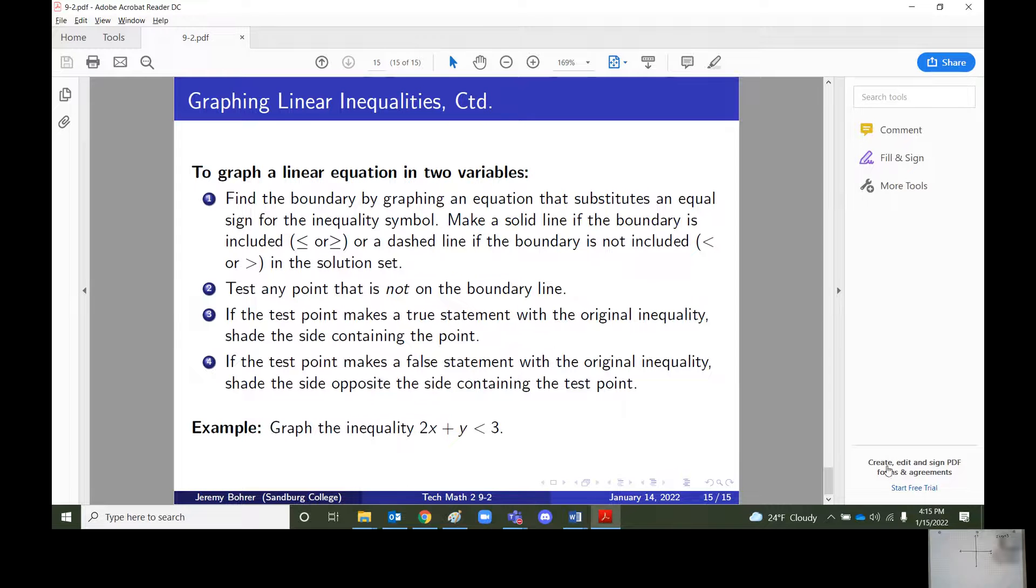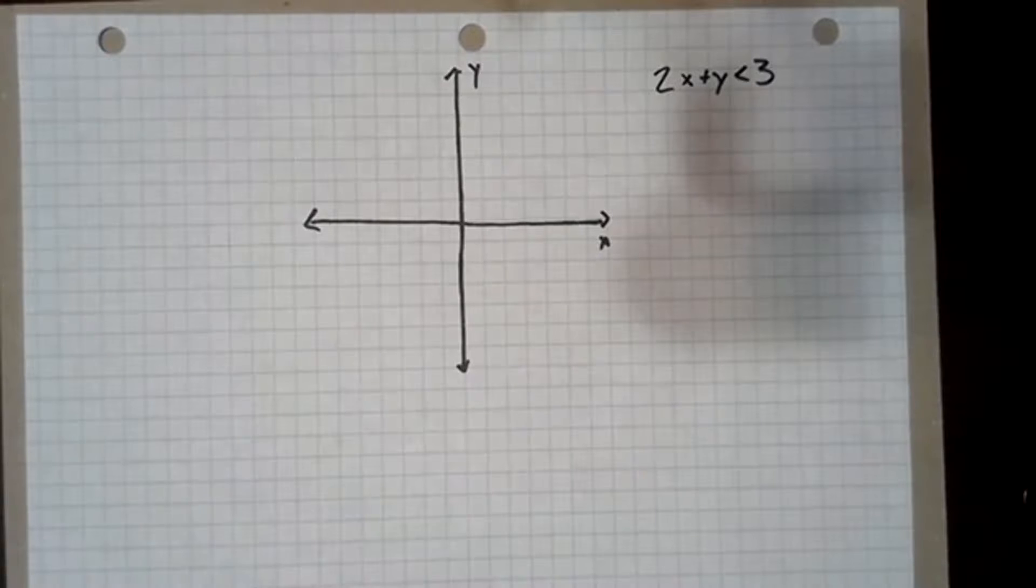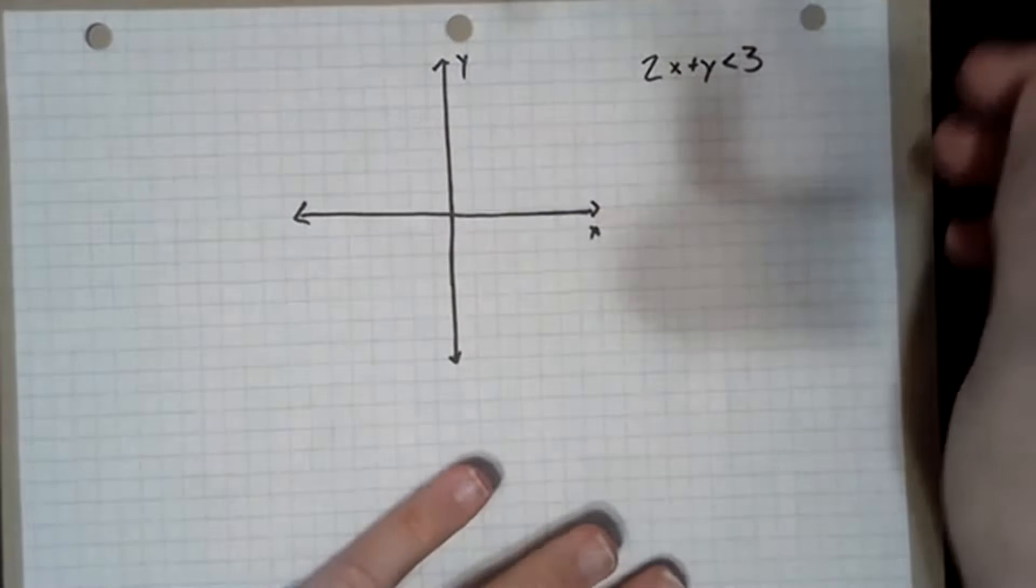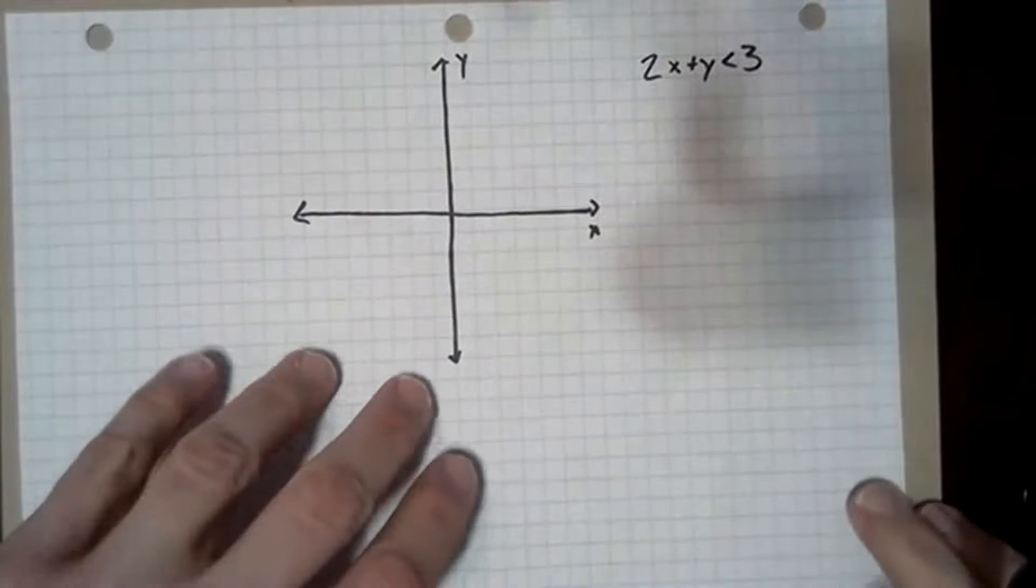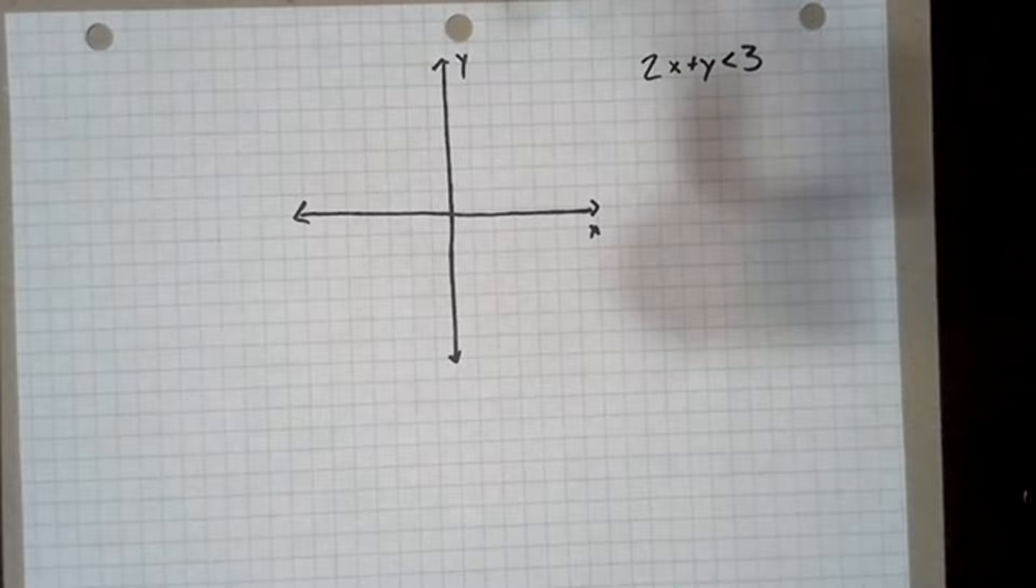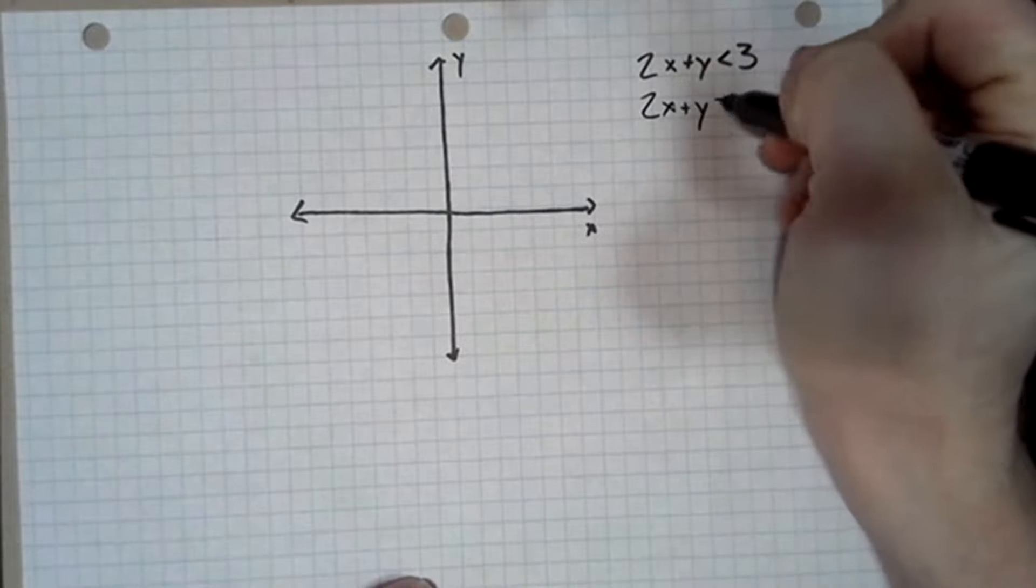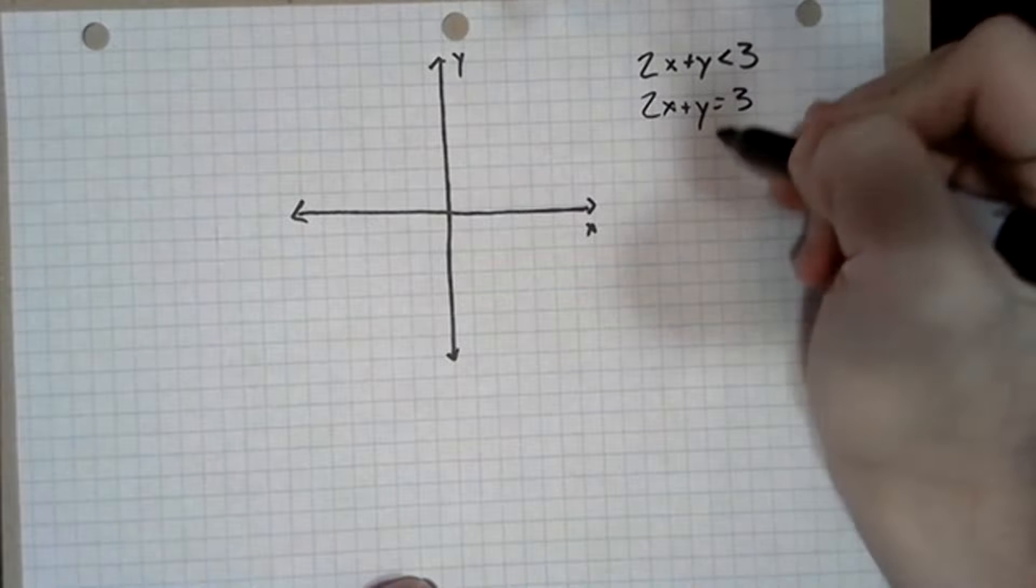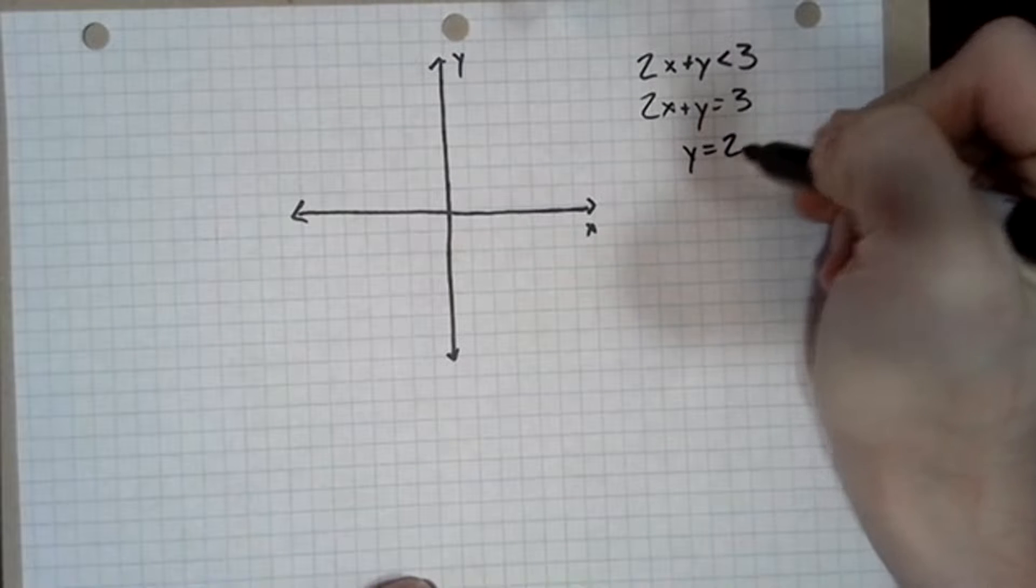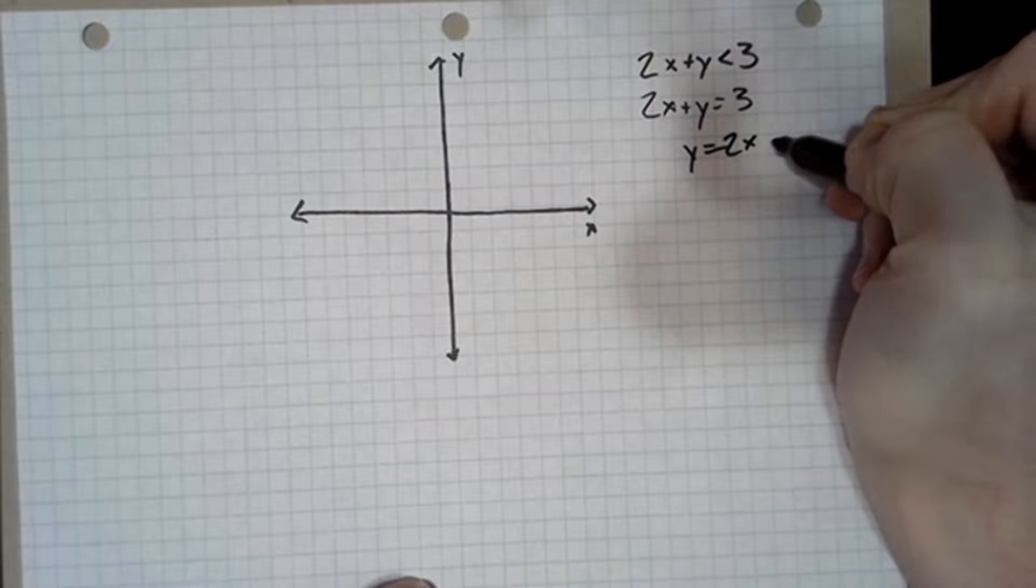So let's go back to my paper. Here we go. So if we've got 2x plus y is less than 3, we want to start by graphing the equation where we replace the less than with an equal sign. So that would be 2x plus y equals 3, and that is the same as y equals negative 2x plus 3.